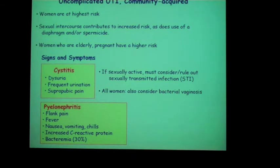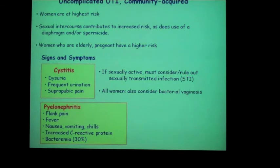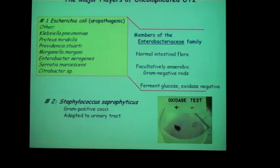Community-acquired UTI can ascend to become pyelonephritis, which is a more serious infection. In that case, the patient may complain of flank pain and may have fever, nausea, vomiting, and chills — a more systemic type of manifestation. The bacteria can actually get into the bloodstream in the case of pyelonephritis.